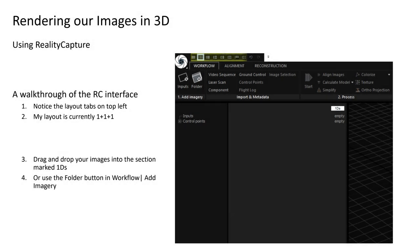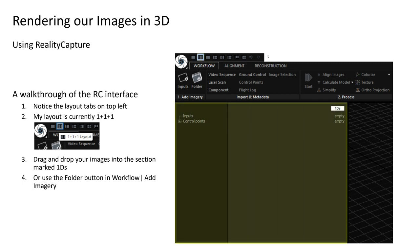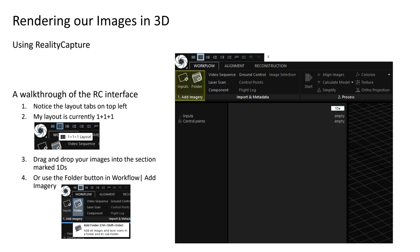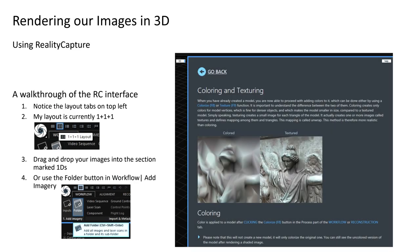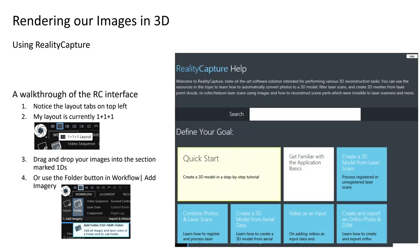Notice the layout tabs on the top left of the RC interface. The interface is using the 1+1+1 layout. You can add project images into the section marked 1Ds by dragging and dropping, or use the Folder button. RC accepts laser scans as inputs too, as you can see in the dialog box. 1+1+1 refers to the inputs, 3D, and help windows. The help section is fairly comprehensive and context sensitive — it adjusts to show relevant content as you work, and includes a step-by-step guide for beginners. I recommend you play with the layout options; the different configurations are helpful for different tasks.